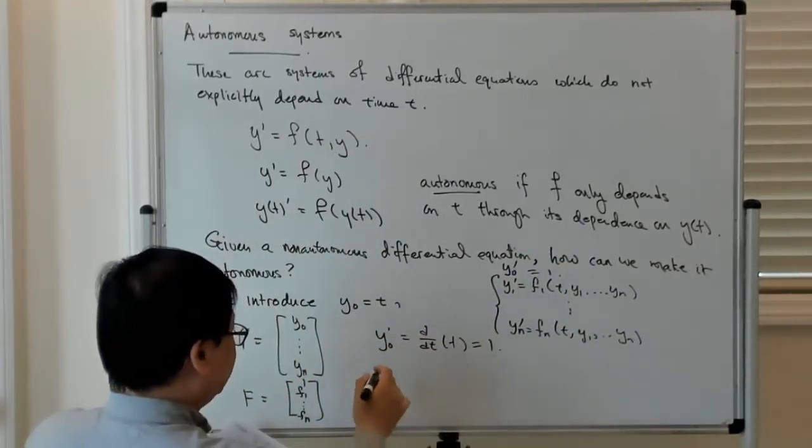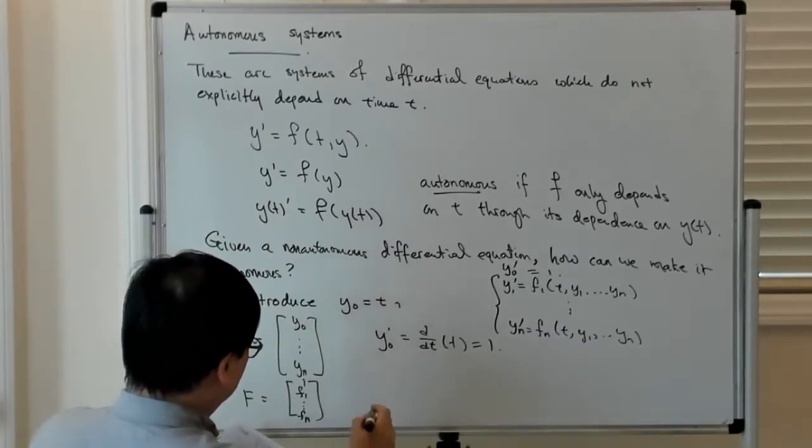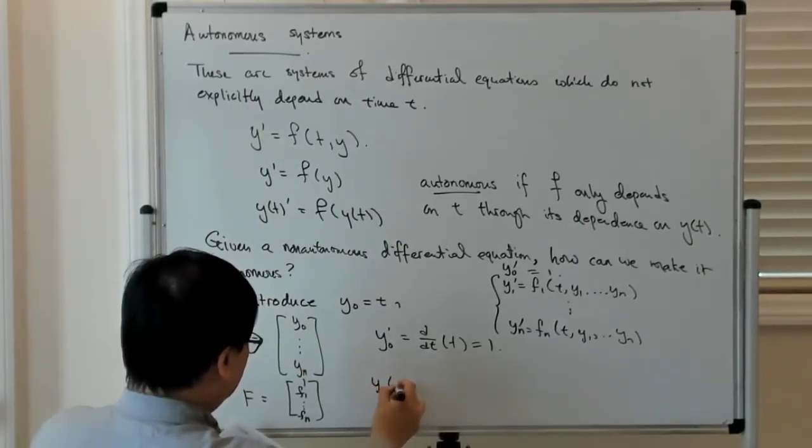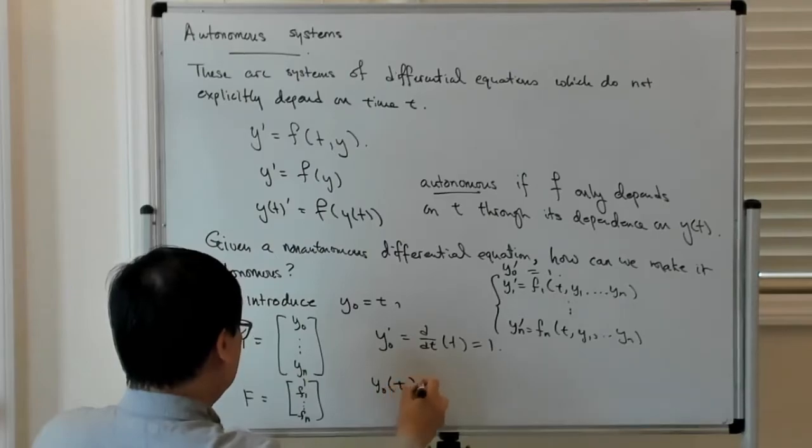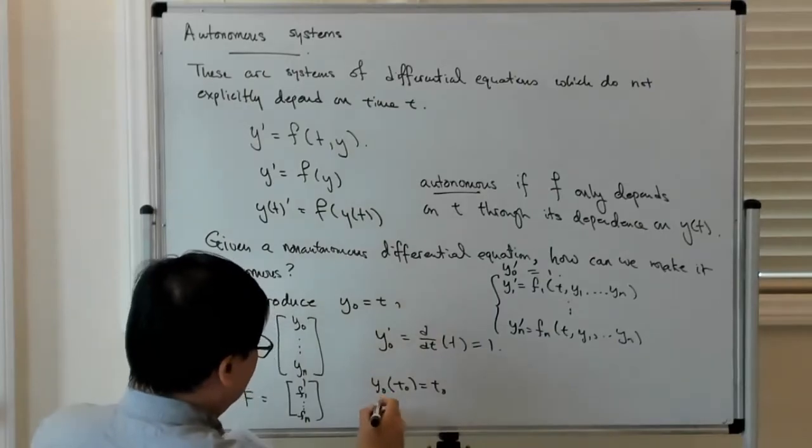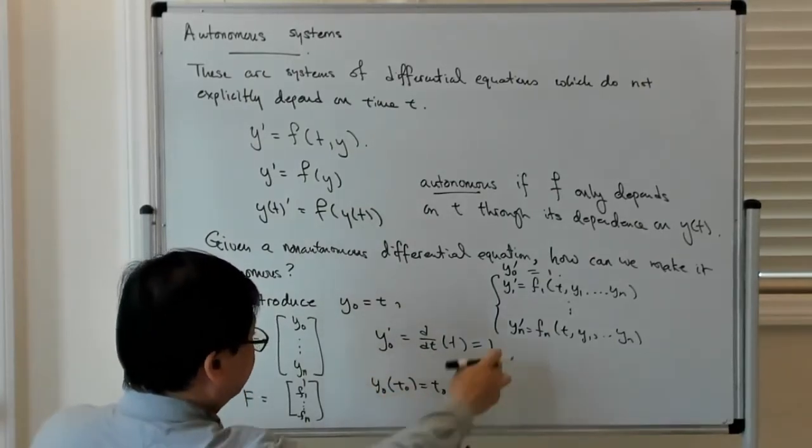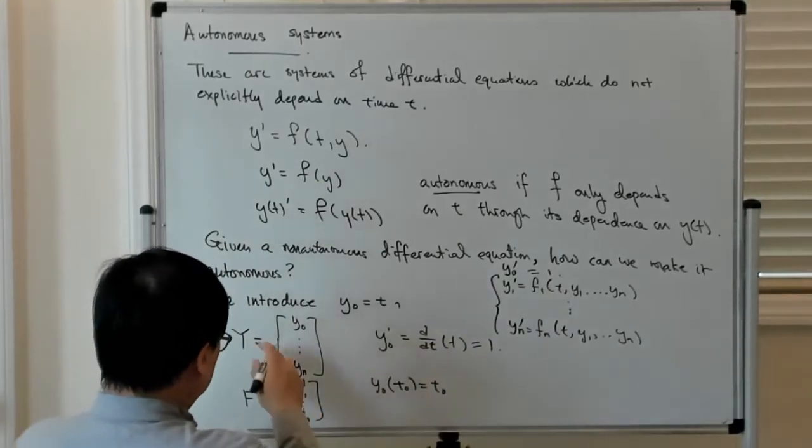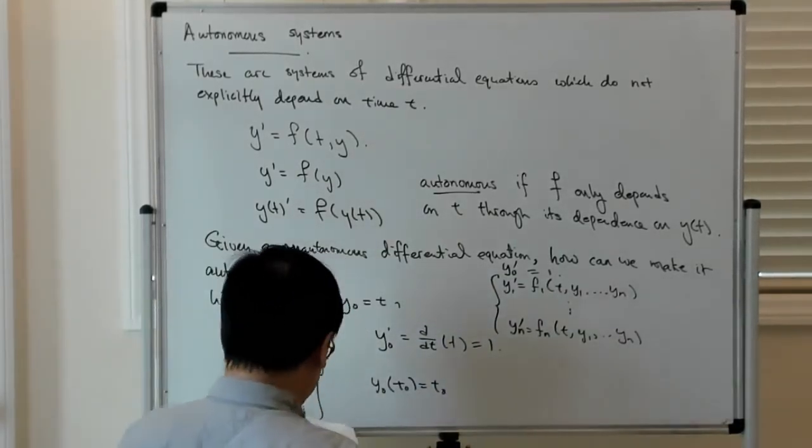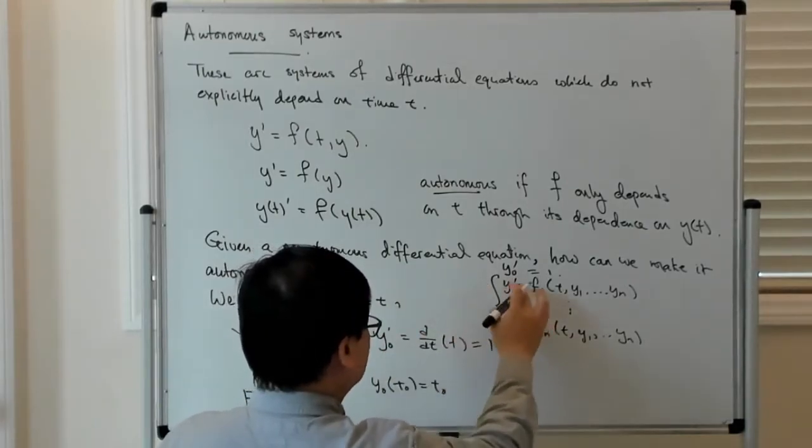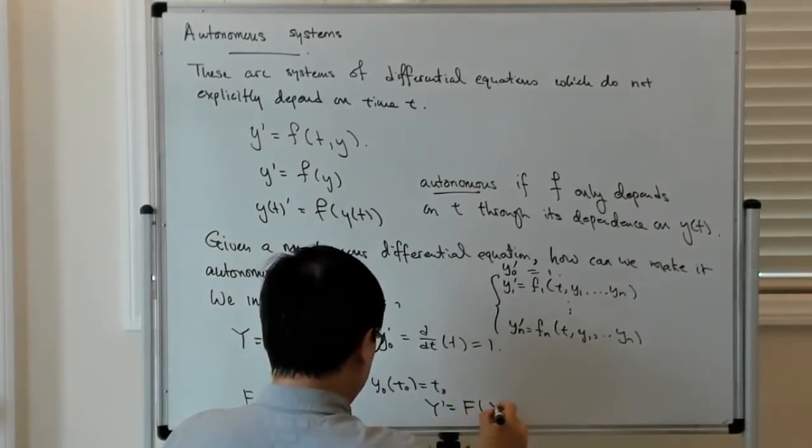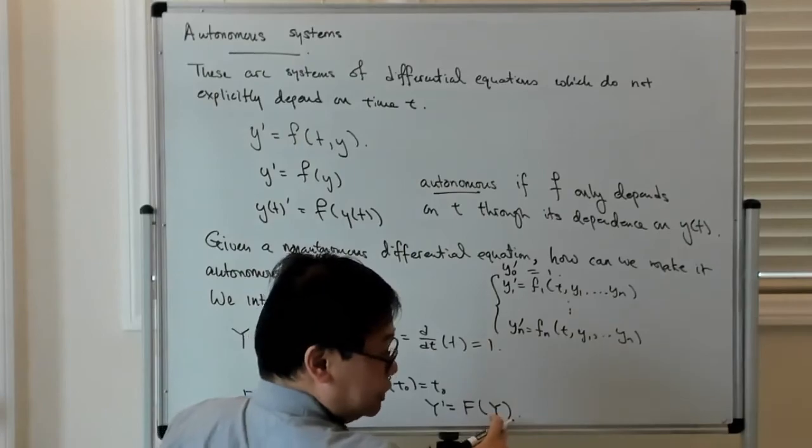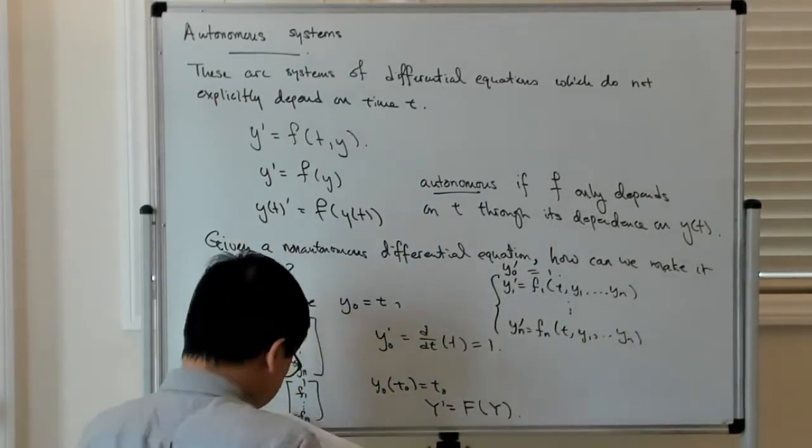And then the other thing you have to do is set up initial conditions. So the initial condition for y0 at t0 is just t0. That's kind of a trivial initial condition, but that's what it is. And then you set up the initial conditions for the other thing. With this kind of identification, you can rewrite that system of autonomous equations as y prime equals f of y, because y now also includes a copy of time, if you will.